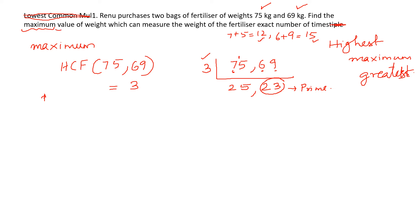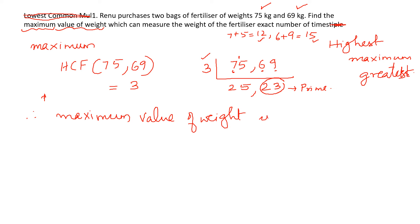Therefore, the maximum value of weight is 3 kg. That means if you use a 3 kg weight, you can measure 75 kg exactly and also measure 69 kg exactly without needing any other weight.